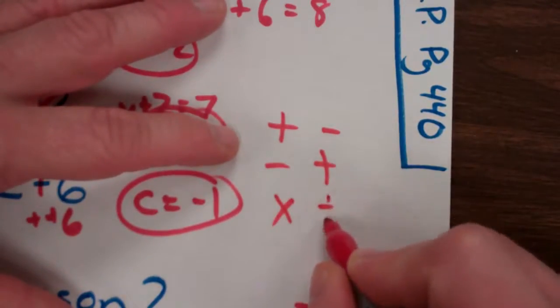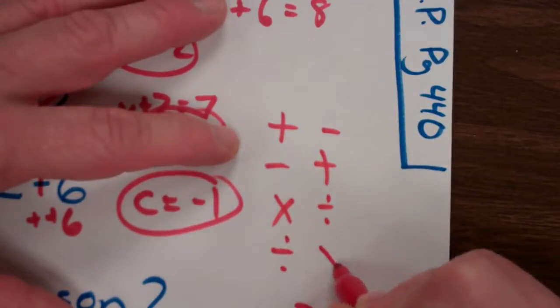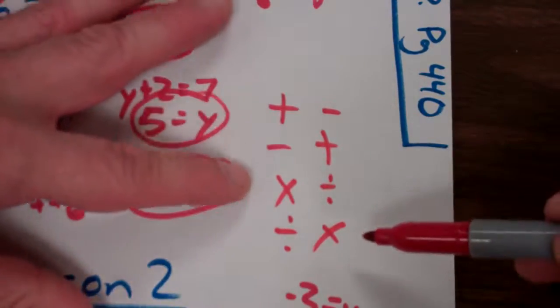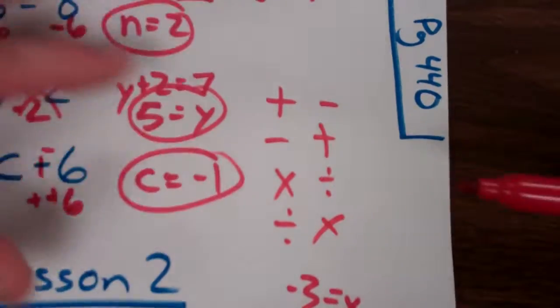What undoes multiplication? Division. What undoes division? Multiplication. Those are called inverse operations. They undo what was already done.